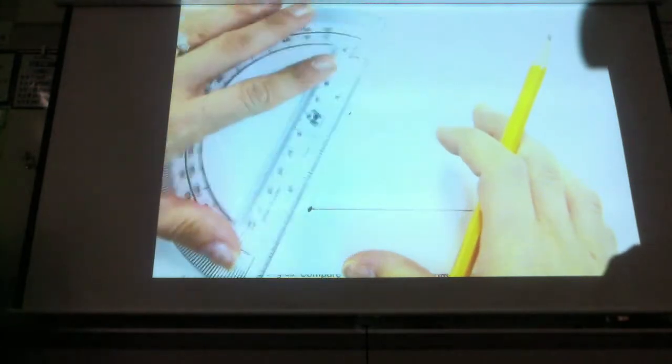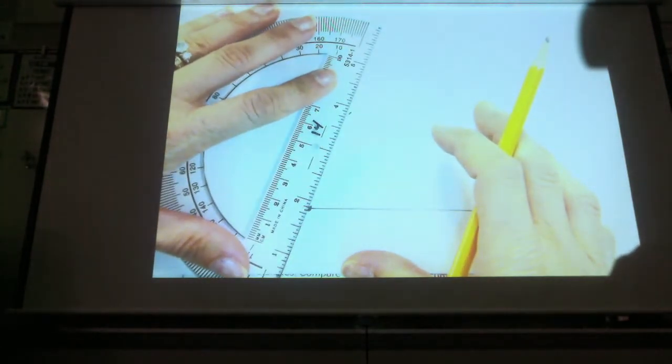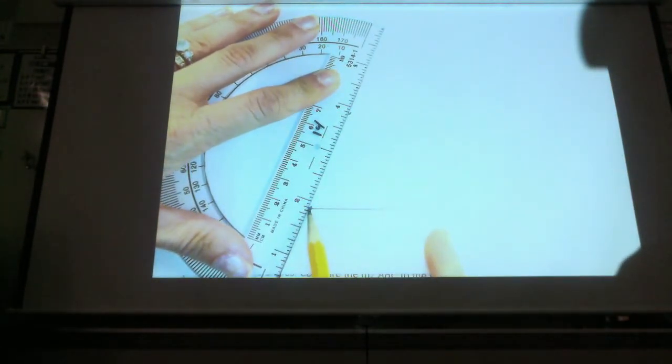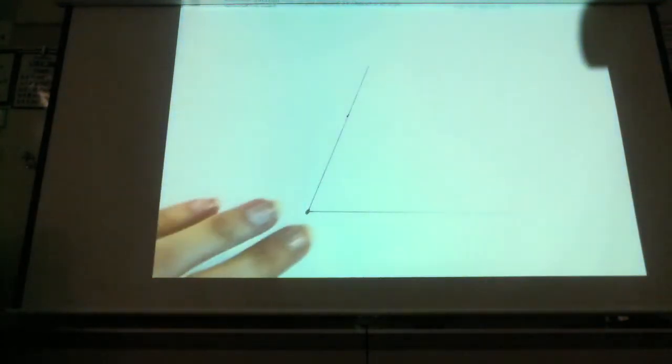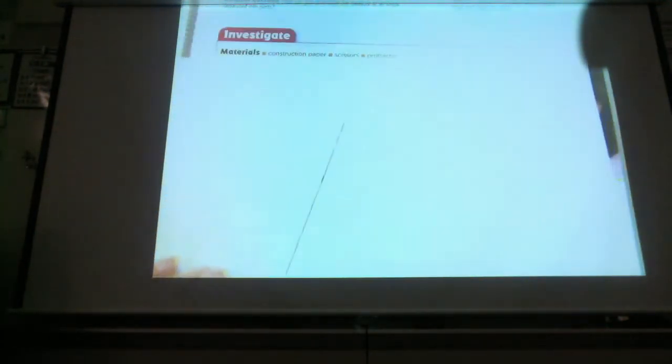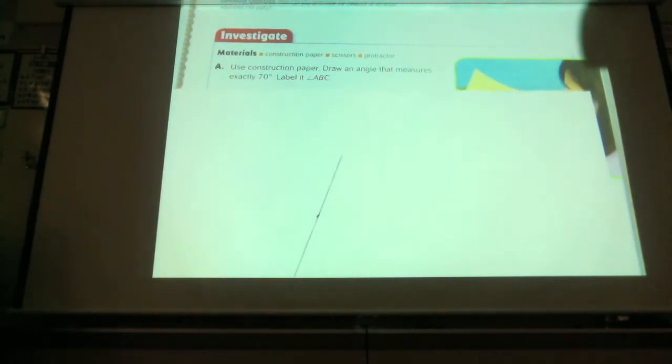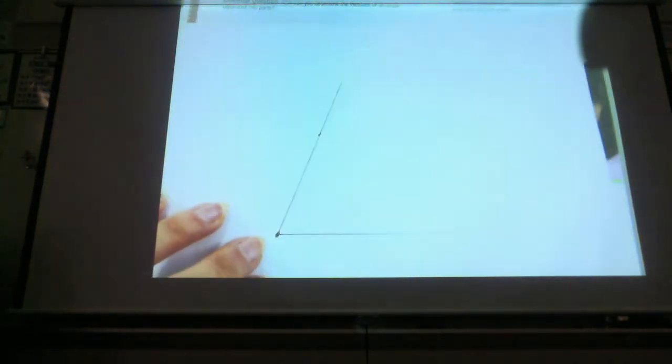So, now I'm going to connect those two dots, those were Nicholas' instructions, and I have a 70 degree angle. The next part said to label it A, B, C. So, can I do A, B, C in any order? No.